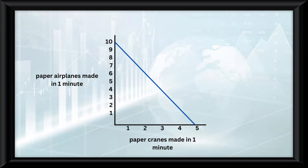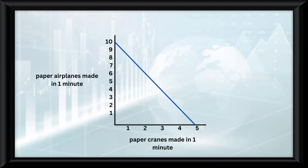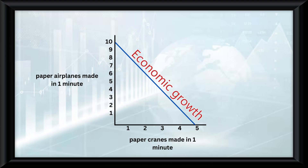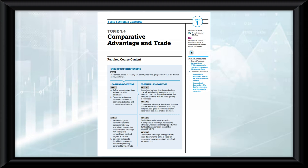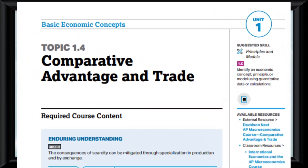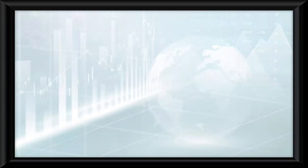Anything outside the curve is said to be unattainable, but if new production methods or technologies were added that were faster, it would result in the curve expanding into potential new areas. Economic growth also results in an outward shift of the PPC.